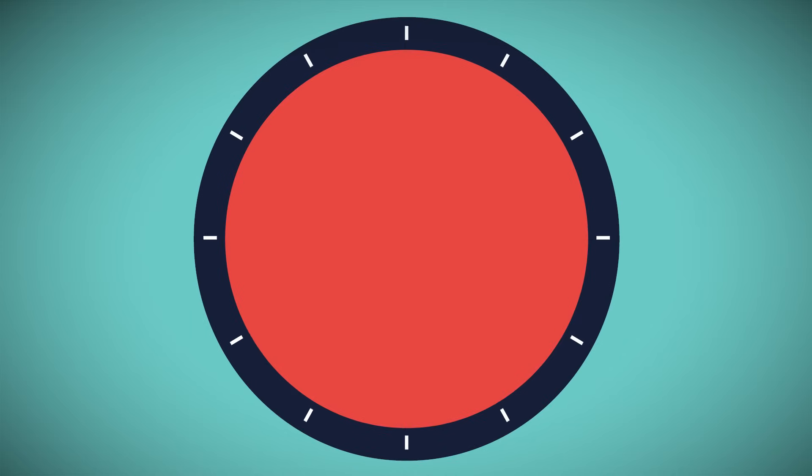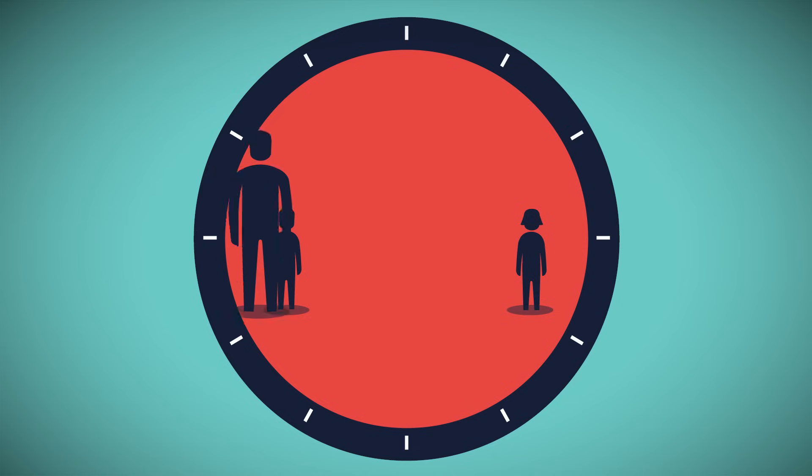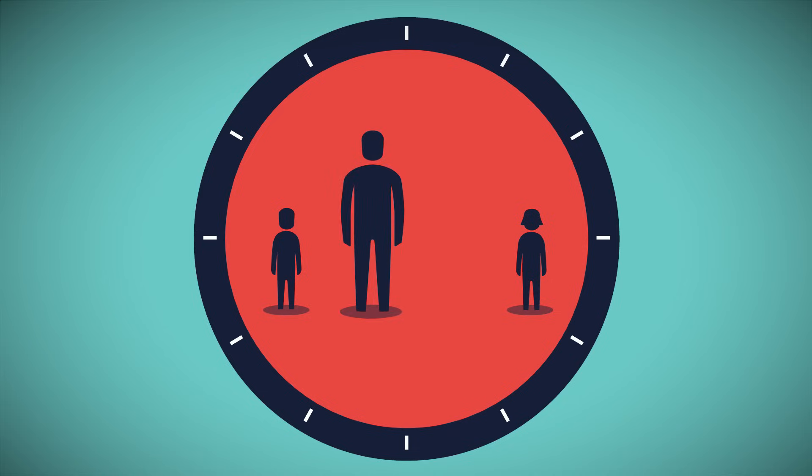Puberty is the time frame when secondary sexual characteristics develop — in other words, when a boy matures physically to a man and a girl to a woman.